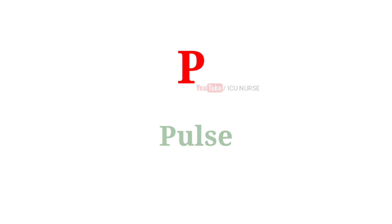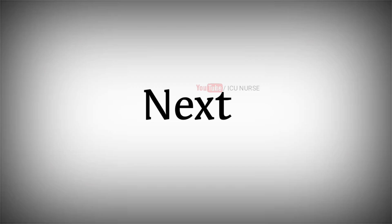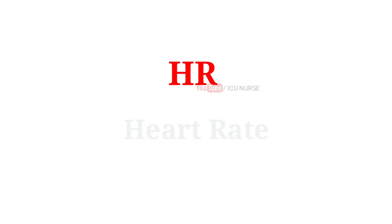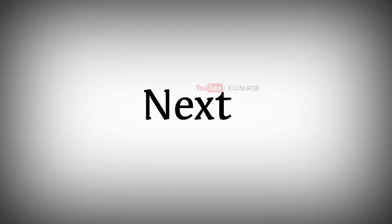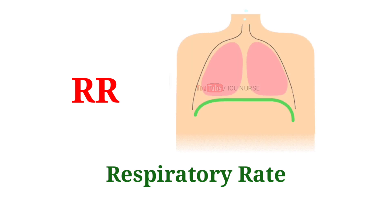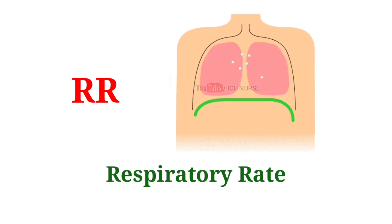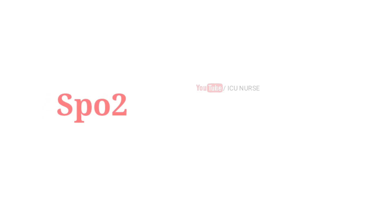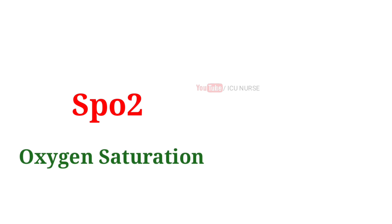P: pulse. HR: heart rate. RR: respiratory rate. SPO2: oxygen saturation.